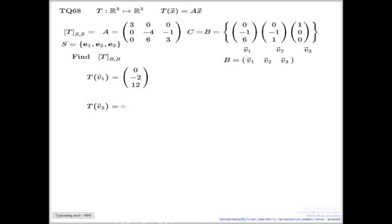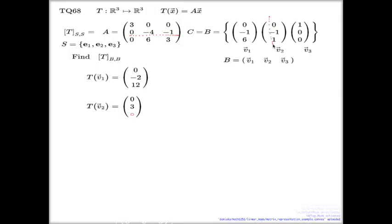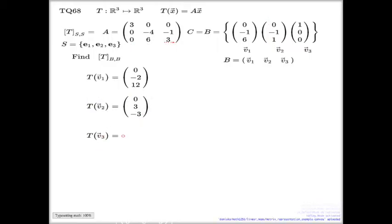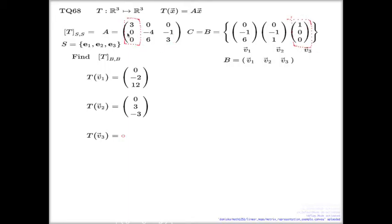For T(V2): the first entry is 0, the second row by the second column gives −4 · (−1) = 4, take 1 giving 3... so the second entry is −3, and the last entry is −6 + 3 = −3. So T(V2) = (0, 3, −3). For T(V3): multiplying the whole matrix by the last vector, since the vector is (1, 0, 0), we just cut out the first column, giving T(V3) = (3, 0, 0). The first step is done: we've recovered the values of T on every element of the basis.